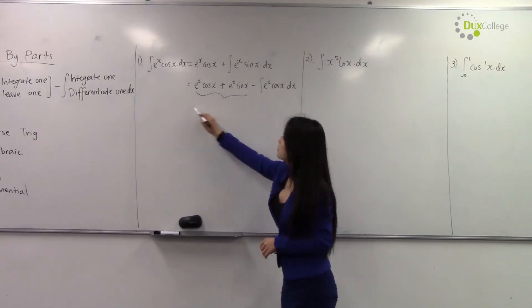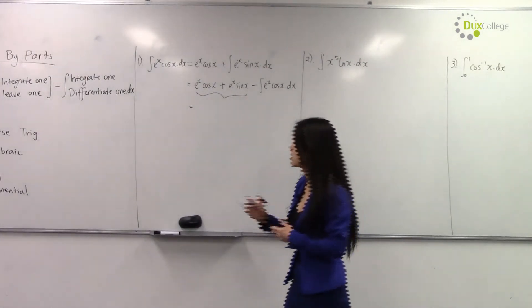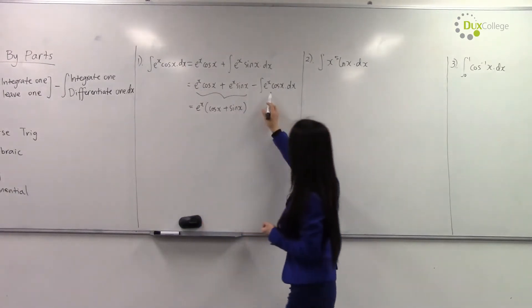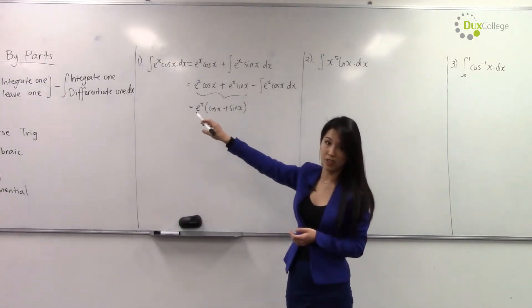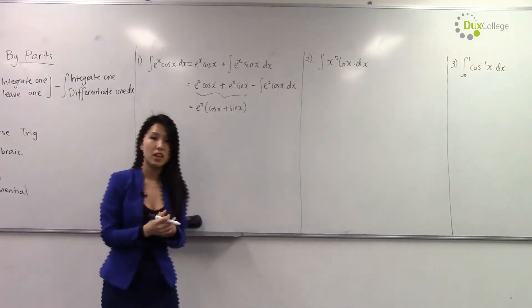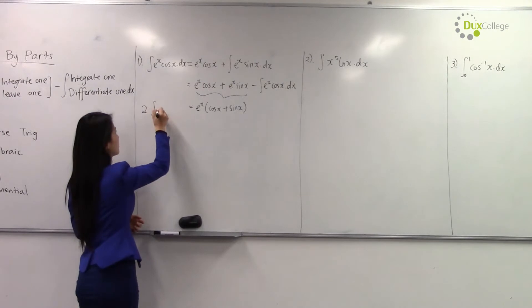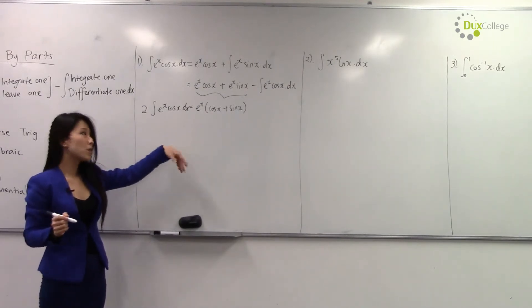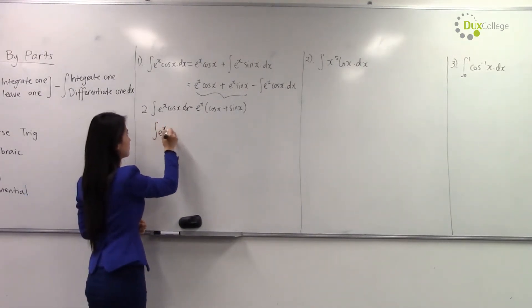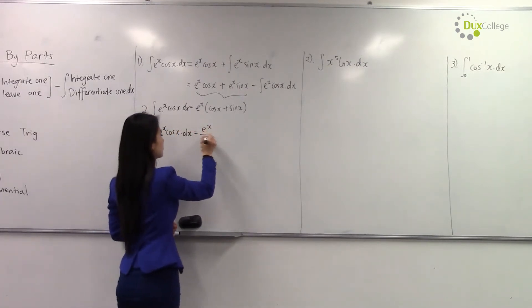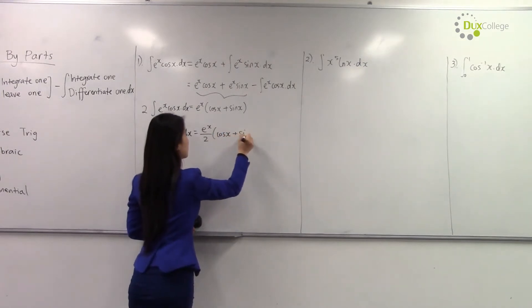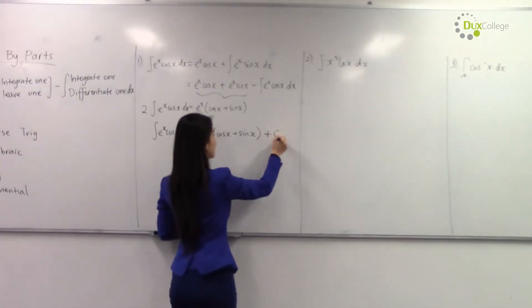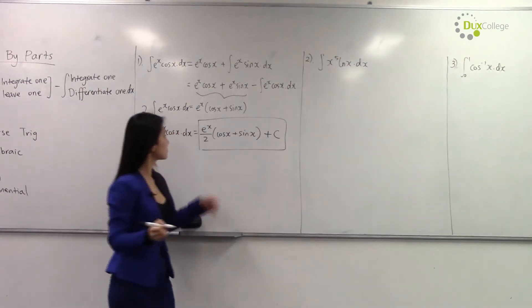Now simplifying the first part, e^x is a common factor that we can take out. For the remaining part, we can move it to the left-hand side of the equation, which becomes two times the integral of e^x cos(x). By dividing the entire equation by two, we have solved our integral. Don't forget to add plus C as your final answer.